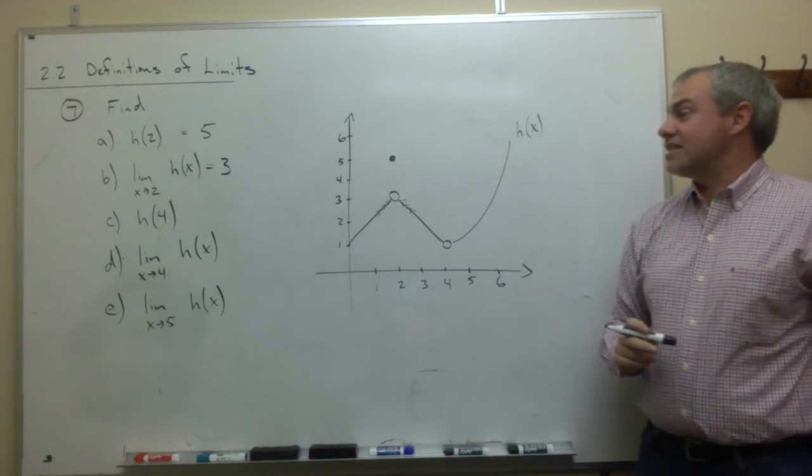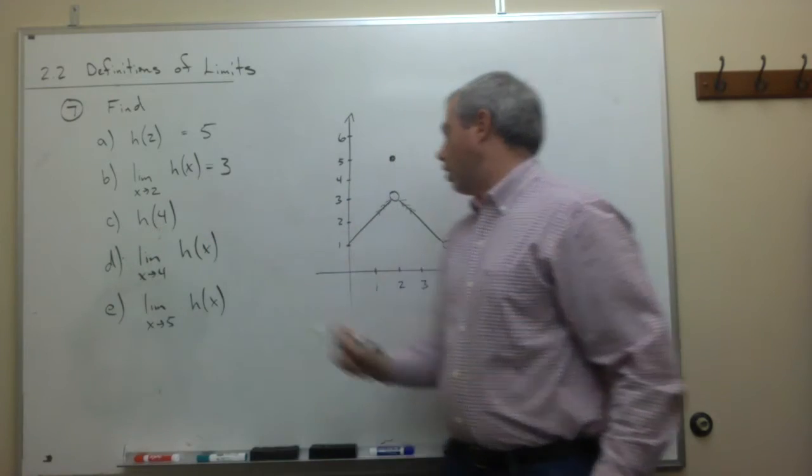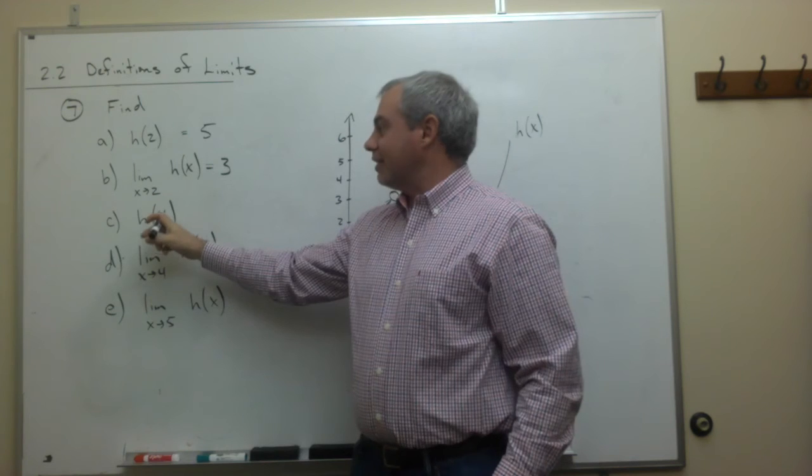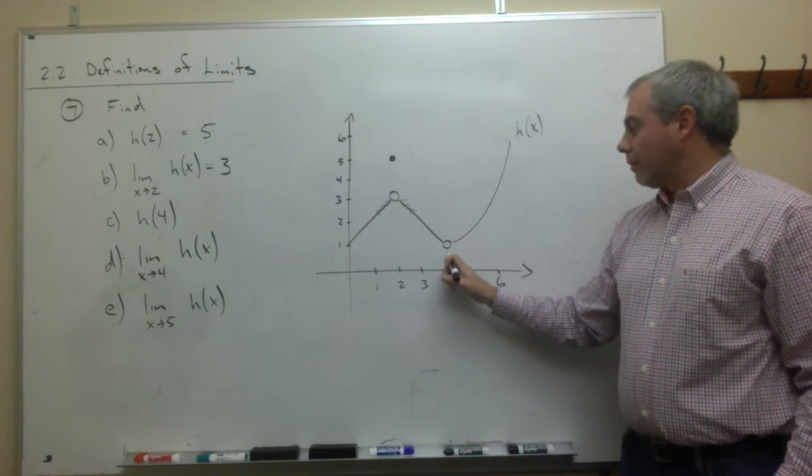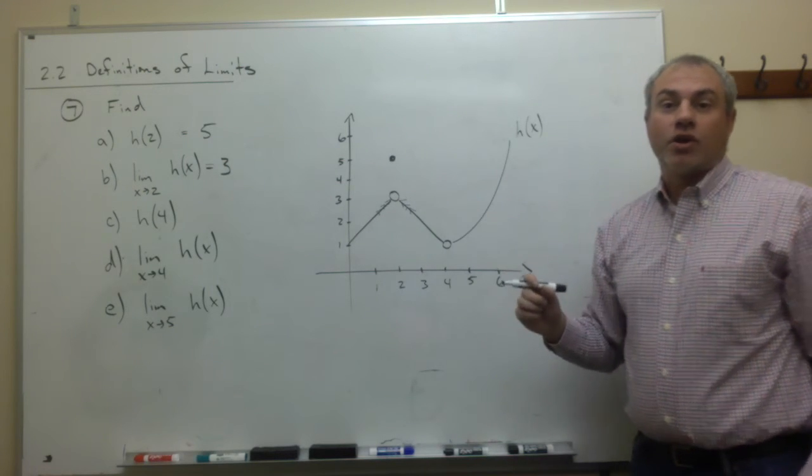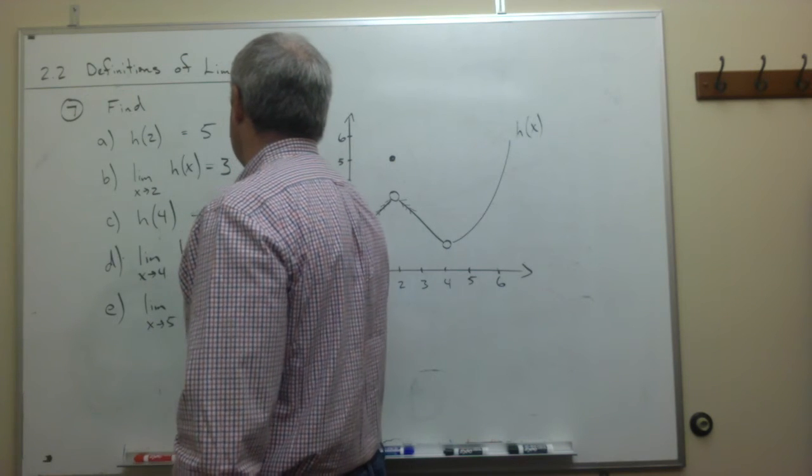Now let's look at part c. Part c says what is h of 4. So we look over here, this is saying what is the point directly above 4. So we look at 4 and we look above it, and we see there is no point directly above 4. So h of 4, we say that this does not exist.